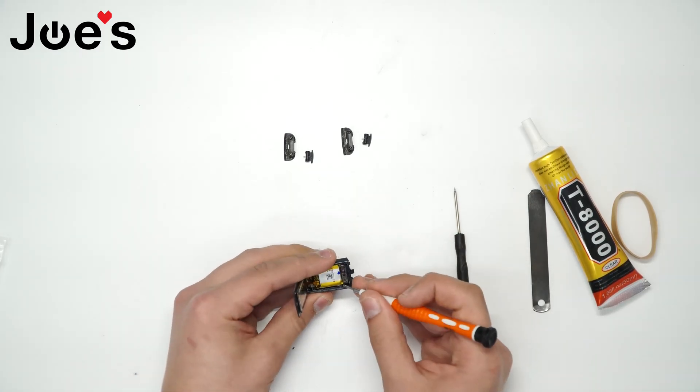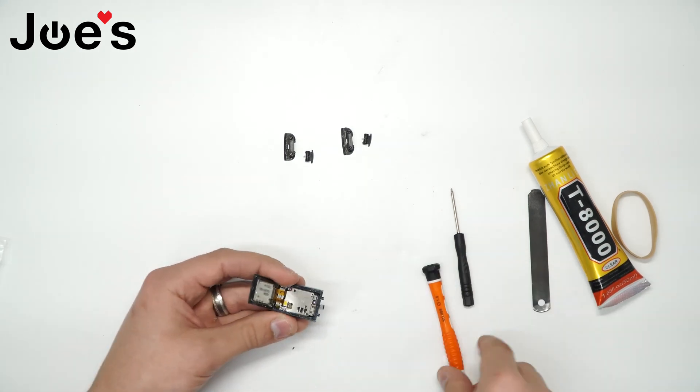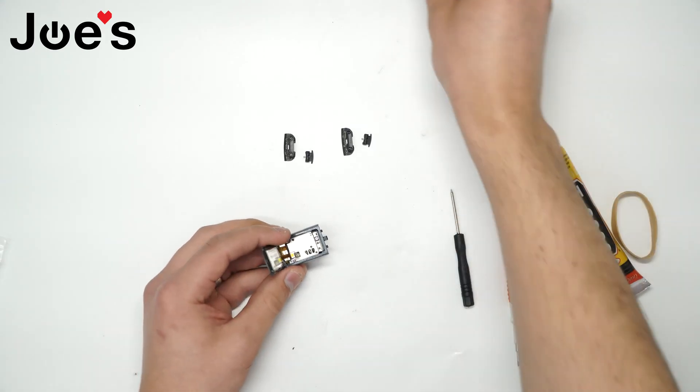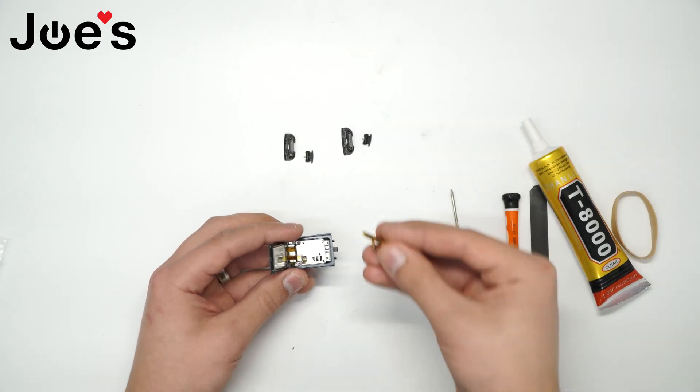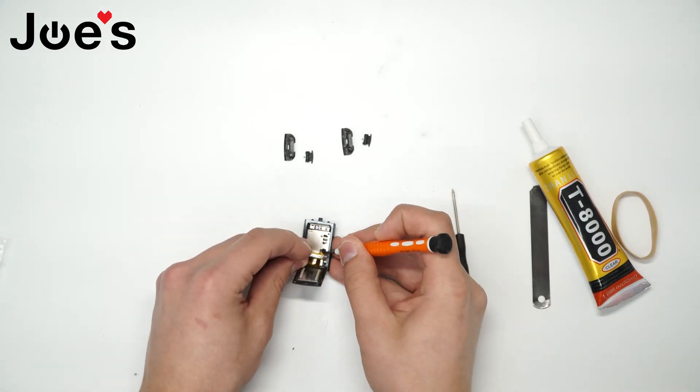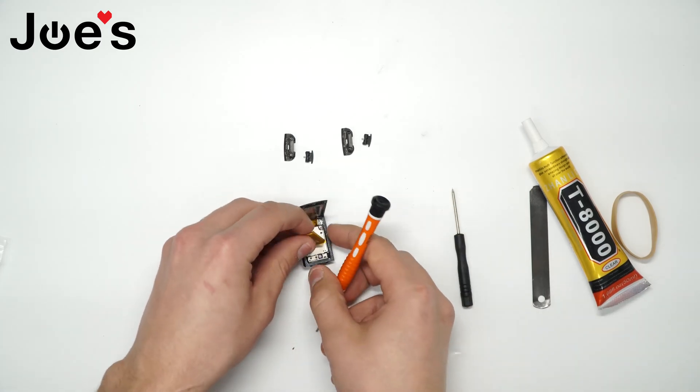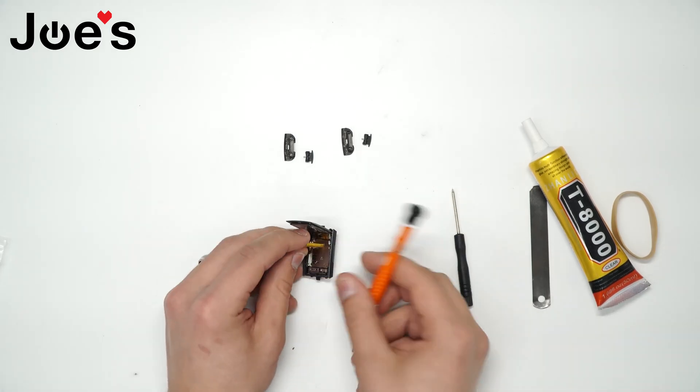Go in there on the side, lift it right up. It should pop right out. Go ahead and get your replacement battery and plug the ribbon back in.